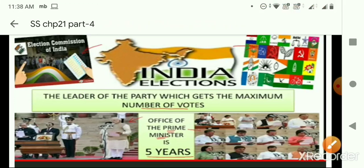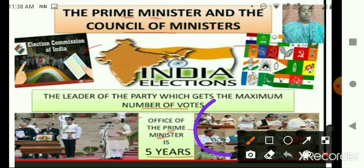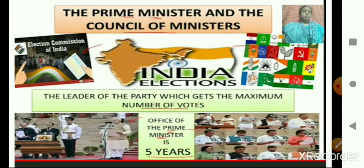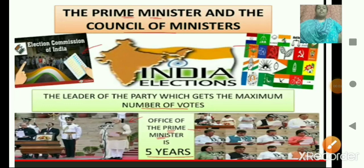The Council of Ministers assists the Prime Minister for the smooth functioning of the government. These ministers look after separate departments of the government — for example, defense, health, agriculture, industries, and finance. The Prime Minister and these ministers make up the Council of Ministers. Therefore, the Prime Minister is the head of the central government and all the powers rest in his or her hands.